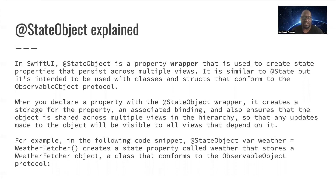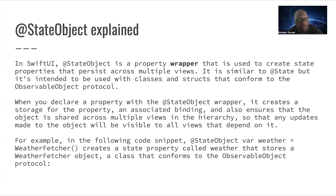@StateObject is a property wrapper used to create state properties that persist across multiple views — that's the key difference from @State. It's similar to @State but is intended to be used with classes and structs that conform to the ObservableObject protocol. When you declare a property with @StateObject, it creates storage for the property, an associated binding, and ensures that the object is shared across multiple views in the hierarchy so any updates are visible to all dependent views.